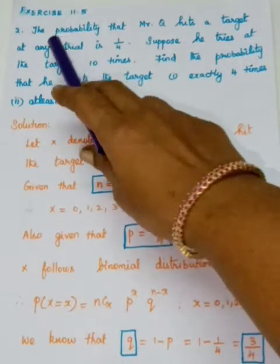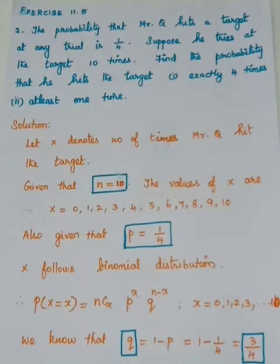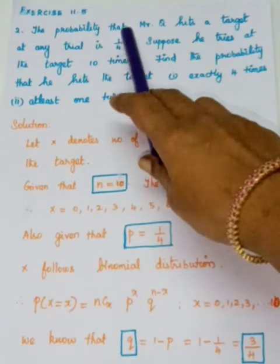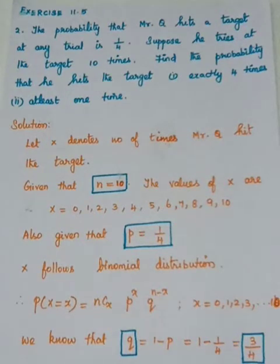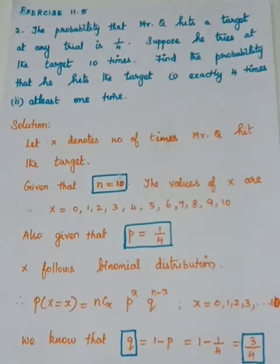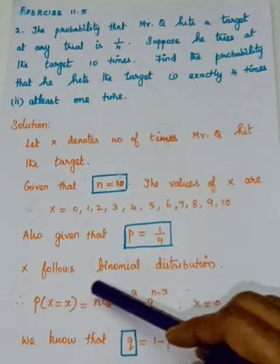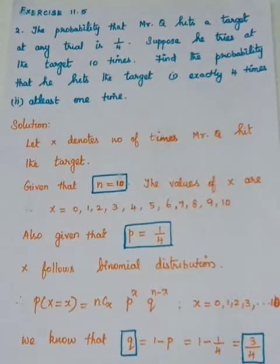The probability that Mr. Q hits a target at any trial is 1 by 4. That means whether it is the first trial, 6th trial, or 10th trial — if Mr. Q hits the target, the chance is 1 by 4. So P is equal to 1 by 4. We have N and P, so we can use the binomial distribution. Therefore X follows binomial distribution. The probability mass function is NCX · P^X · Q^(N−X), where X varies from 0 up to 10.